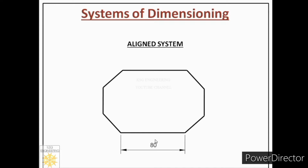One more point: when we place dimensions for horizontal lines, dimensions must be readable from the bottom of the page. So if you write the dimension this way, it is readable from the bottom of the page.